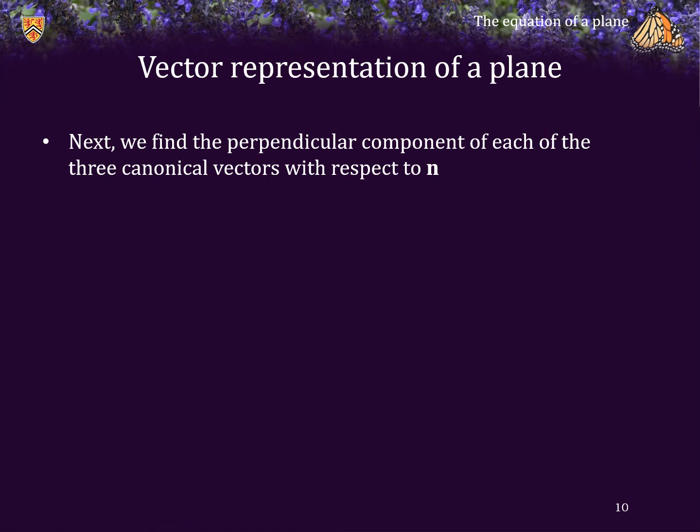All right, so next we will find the perpendicular component of each of the three canonical vectors with respect to the normal vector, ABC.